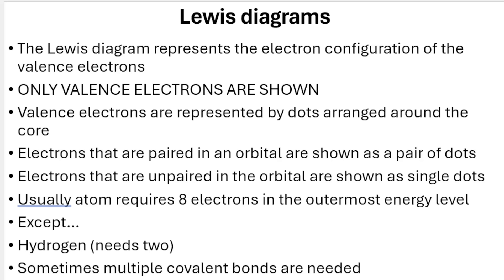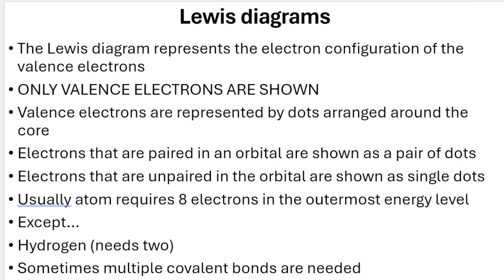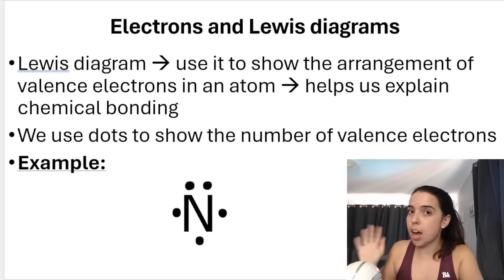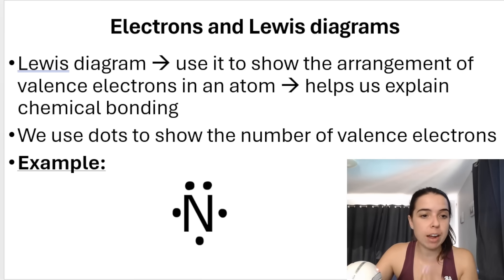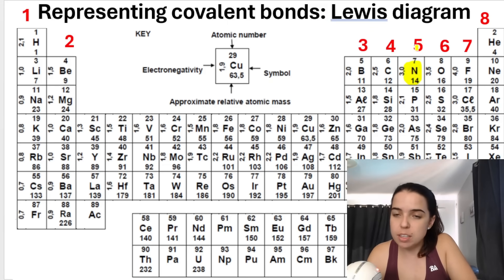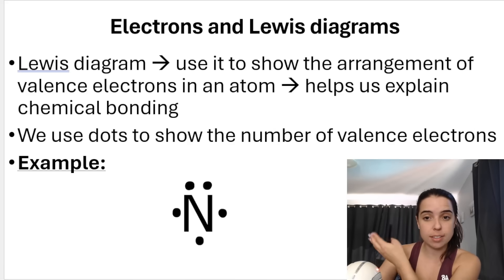Electrons that are paired are shown as a pair of dots; electrons that are unpaired are shown as single dots. Usually atoms require eight electrons in the outermost energy level following the octet rule, except hydrogen — that's our exception. Hydrogen needs only two. Sometimes we need to form multiple covalent bonds, not just single bonds but double or triple bonds. Before drawing Lewis dot diagrams for bonded molecules, let's go over how to draw one for an element. For nitrogen, there are five dots surrounding it because nitrogen is in group five on the periodic table.